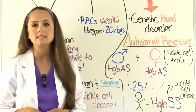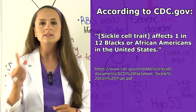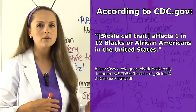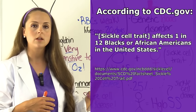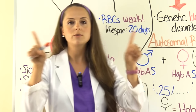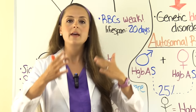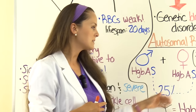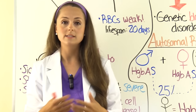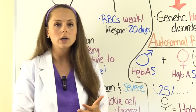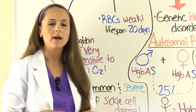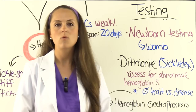What patient population is at most risk? According to the CDC, 1 in 12 African Americans carry the sickle cell trait. Since it's relatively high, when two African Americans have a child, there's a 25% chance each can pass hemoglobin S to their offspring, giving that child sickle cell disease. It can also occur in Middle Eastern, Asian, Caribbean, and Eastern Mediterranean populations as well.